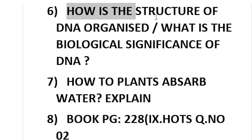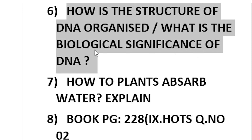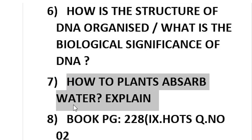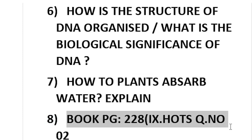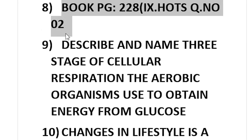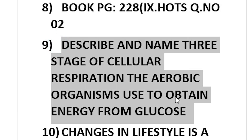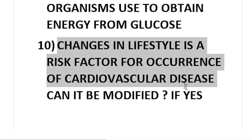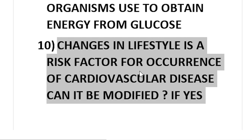Explain the male reproductive system of a rabbit with a labelled diagram. How is the structure of DNA organized? What is the biological significance of DNA? How do plants absorb water? Explain. Describe the three stages of cellular respiration — the aerobic organism used to obtain energy from glucose. Changes in lifestyle as a risk factor for cardiovascular diseases — can it be modified? If yes, suggest measures for prevention.